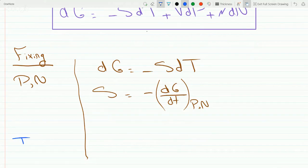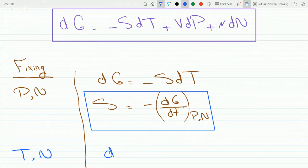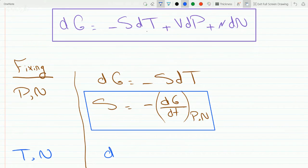Now if you fix temperature and molecules, then dT is zero and dN is zero, and you get dG equals VdP,